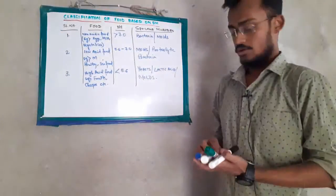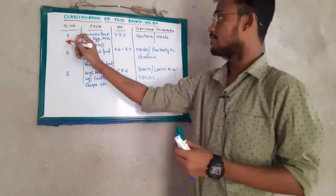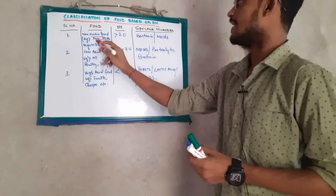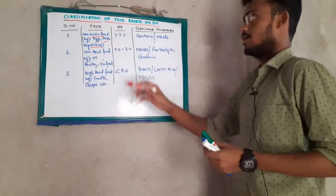First, we have non-acidic food, for example eggs, milk, vegetables, and green vegetables.